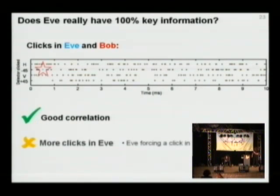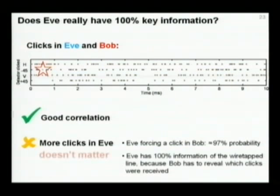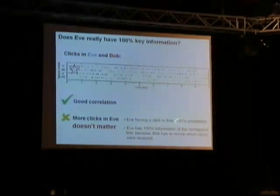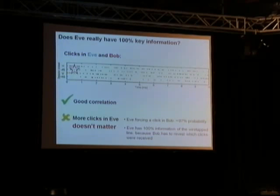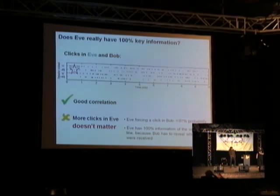This sometimes occurs — our control is not completely perfect. We can only cause a click in Bob with 97% probability. Sometimes Eve sends a faked state but Bob does not get a click. This is not a problem: after transmission, Bob always reveals which clicks he actually had and their timing. Eve simply discards those clicks she failed to induce in Bob. Such a small deviation from unit probability is trivial to hide. So the attack works, and we are sure we have 100% information on the secure key.